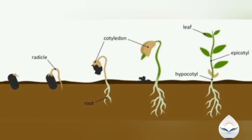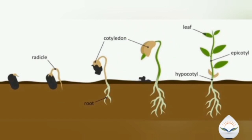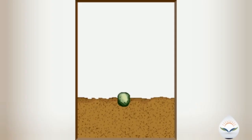After the emerging of the radicle and the plumule, the shoot starts growing upwards. In the final stage of seed germination, the cells of the seeds become metabolically active, elongate and divide to give rise to the seedling.